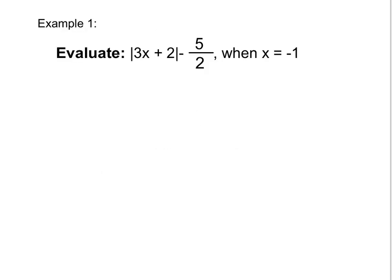When we evaluate an expression with absolute value bars, we treat the absolute value like parentheses, so we will simplify everything inside of our absolute value bars, and then take the positive value of this and continue to simplify.